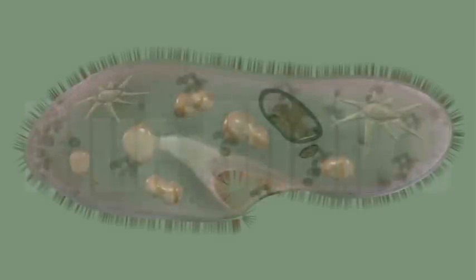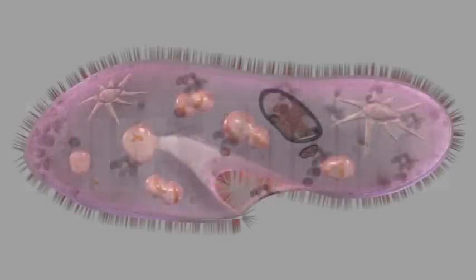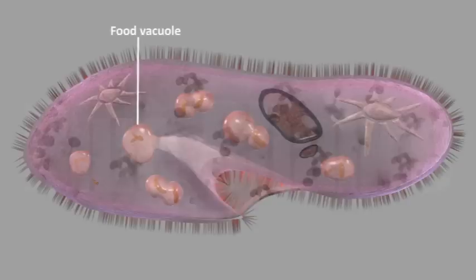After ingestion, food is digested in the body. Once there is enough food built up at the base of the oral groove, the food particles are drawn into the paramecium's mouth and form a food vacuole. The food gets digested by digestive enzymes inside the food vacuole.